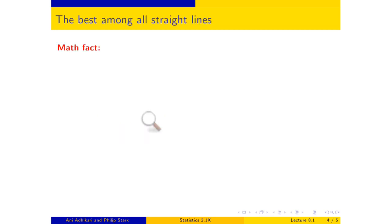It turns out there is a wonderful math fact that says if you look at all the straight lines you could possibly put through your scatter diagram, any scatter diagram at all, associated with every one of those lines is a root mean squared error. Some are very large—those lines are terrible. Some are small—those are the ones you want to use.